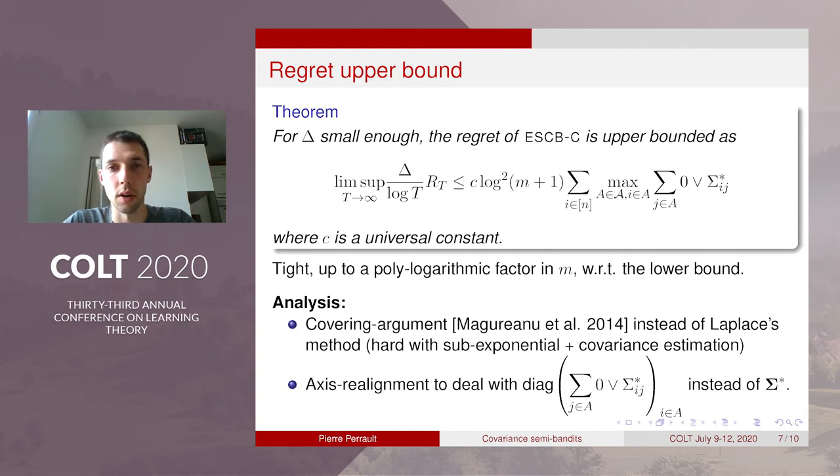And I have to emphasize that this is for small delta. So this is because of the sub-exponential assumption and because of the estimation of the covariance that brings second order errors. But here we just print the first order error. So this is for small delta.